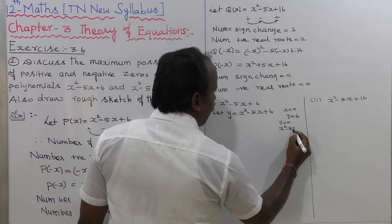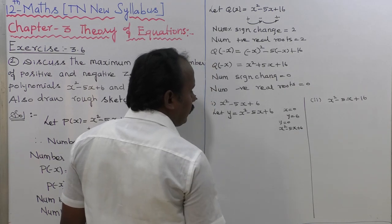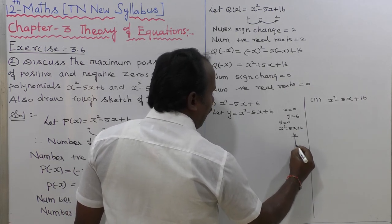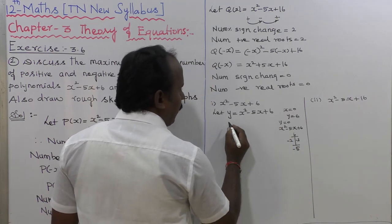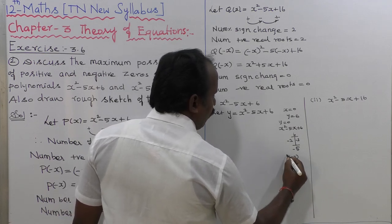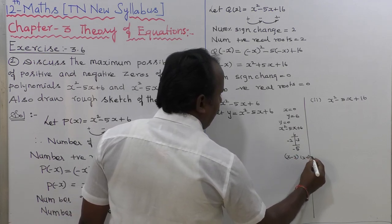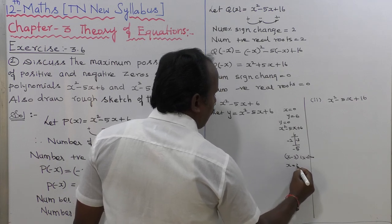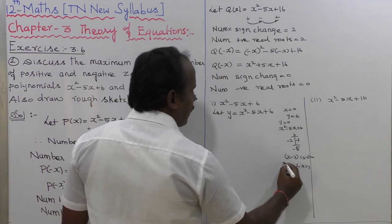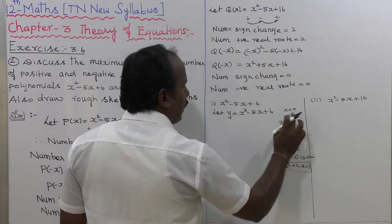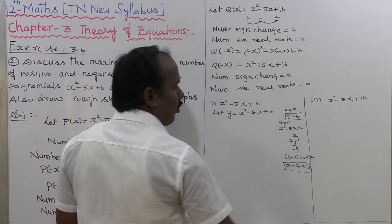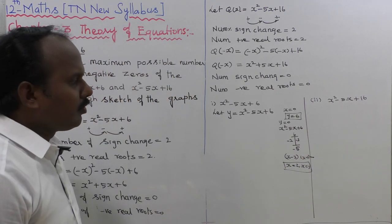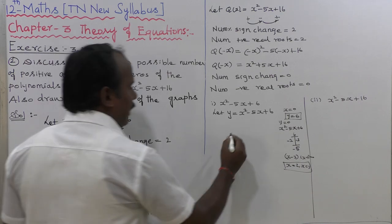Setting y equal to 0: x squared minus 5x plus 6 equals 0. The multiplication factor of 6 with addition giving 5 gives us 2 and 3. So we factor as x minus 2 times x minus 3 equals 0, giving x equal to 2 and x equal to 3. The y-intercept is at y equal to 6, and the x-intercepts are at x equal to 2 and x equal to 3.